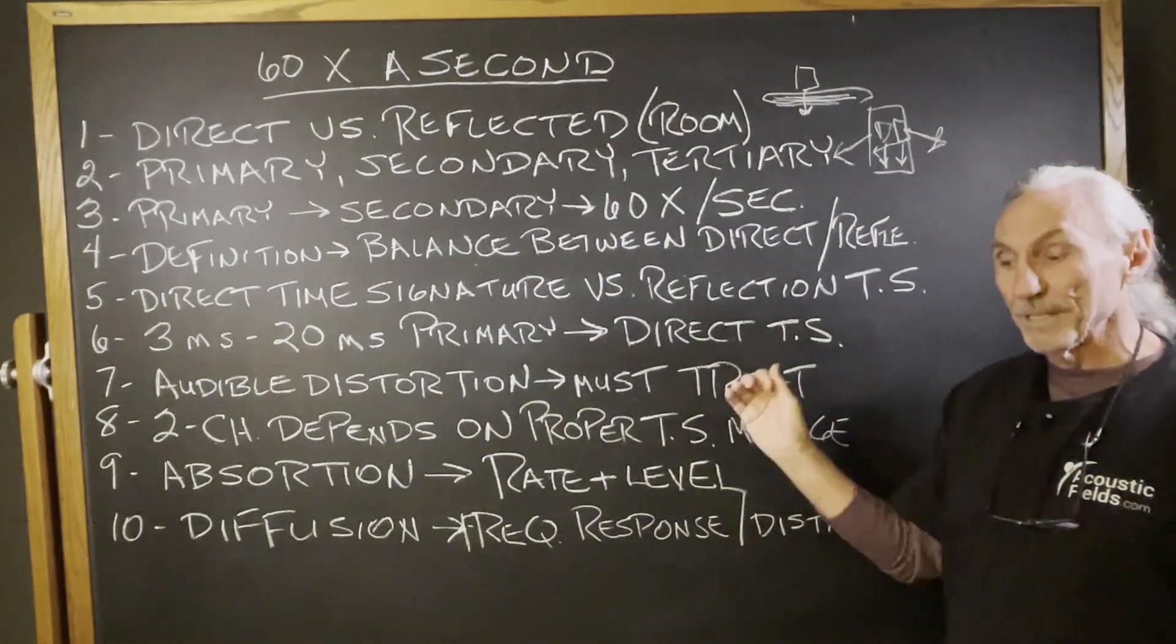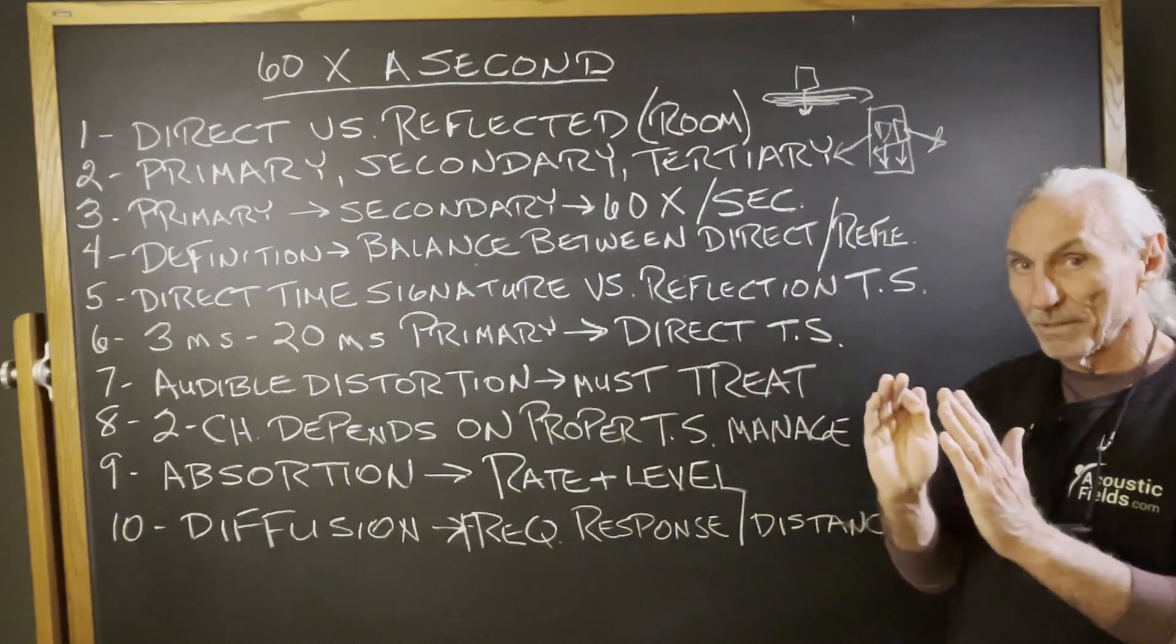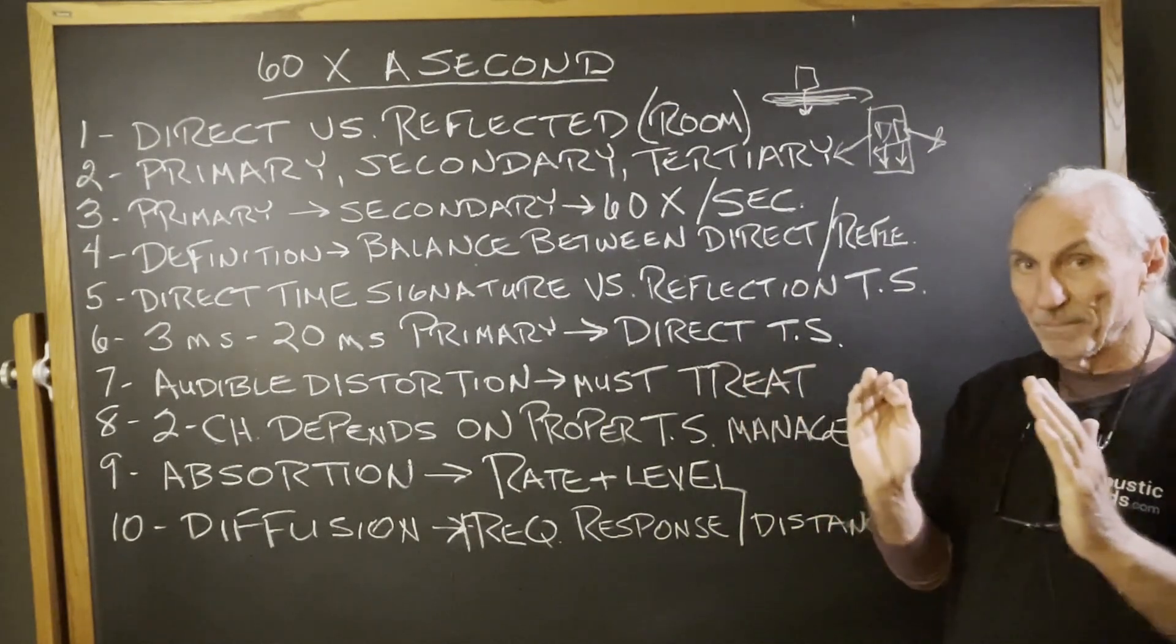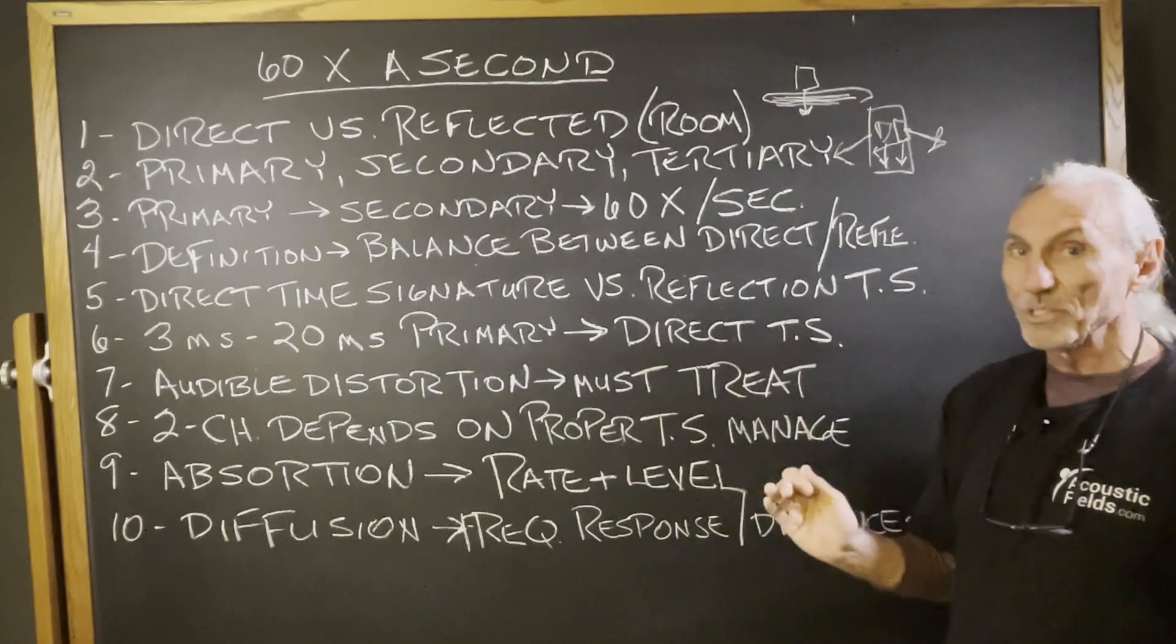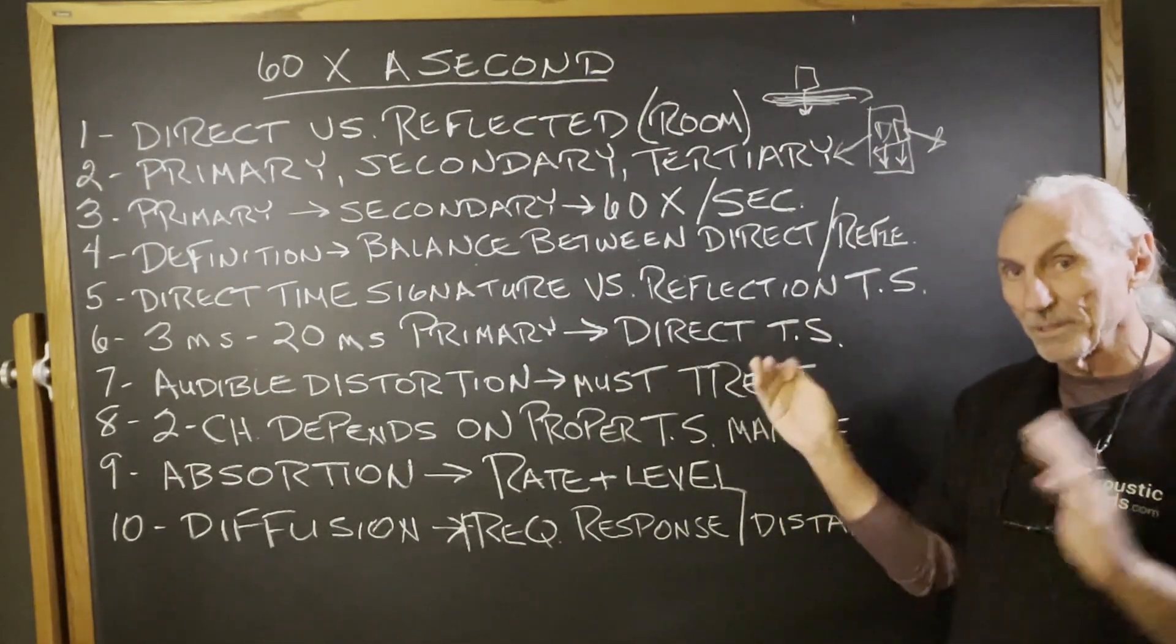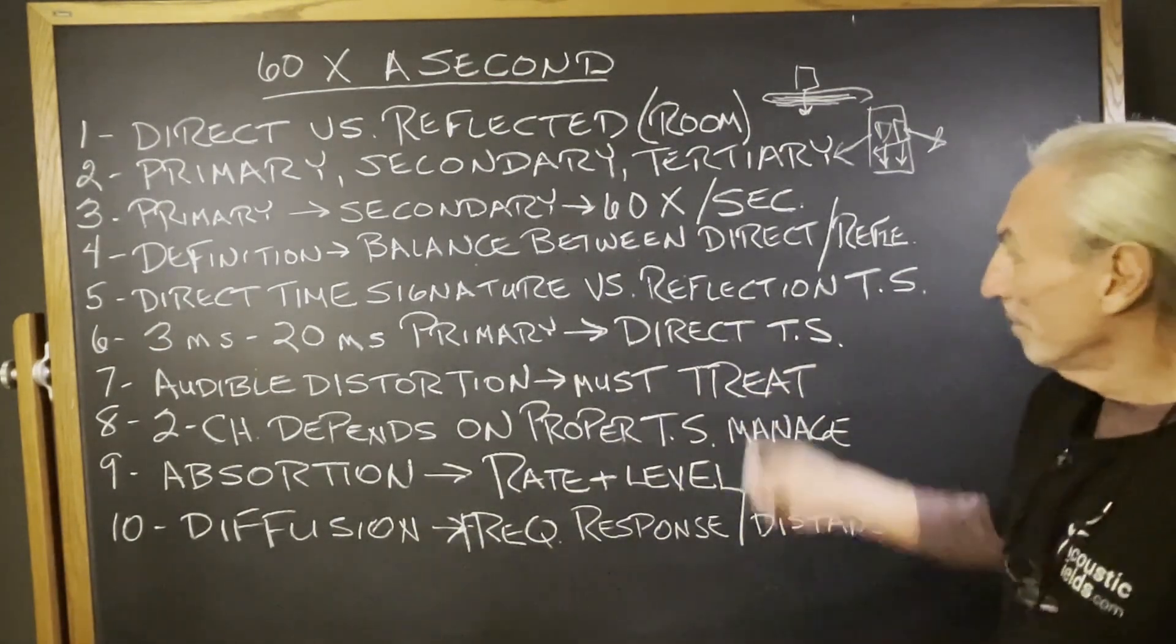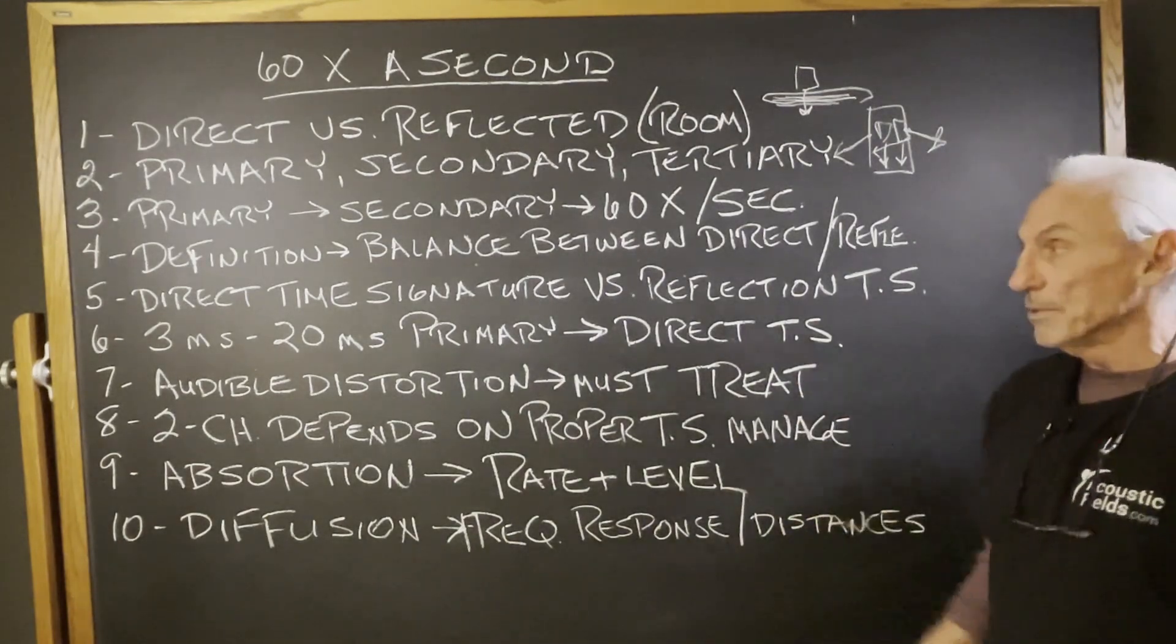Now on two channel rigs you can actually control the image with the side wall distances. Expand it, make it tighter, make it in the middle. There's a lot of things you can do, and what you're doing is you're balancing the direct energy from the speakers with the side wall distances by moving it this way. We don't do that now with treatment. We don't use distance so much, we use treatment.